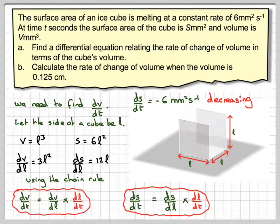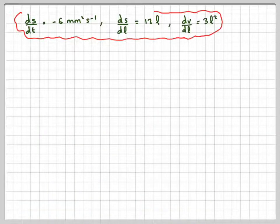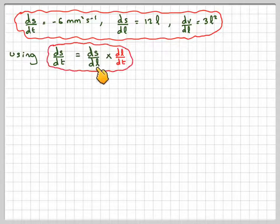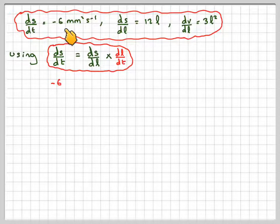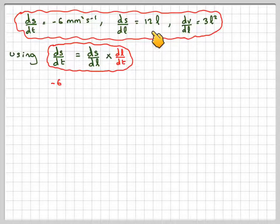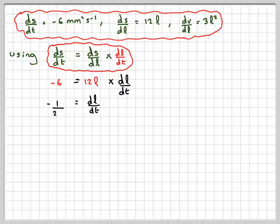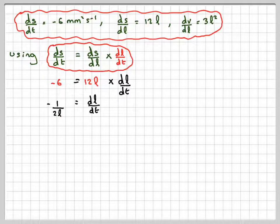If we can take all that information, using ds/dt equals ds/dL times dL/dt, we have that minus 6 from here is equal to 12L times dL/dt. So we can find dL/dt. So dL/dt will be minus 6 over 12L, which is minus 1 half, so minus 1 over 2L, once we divide by 12L there.